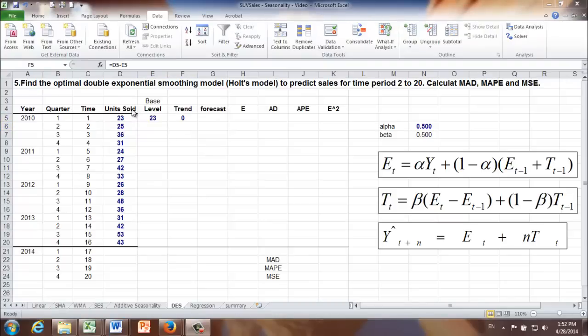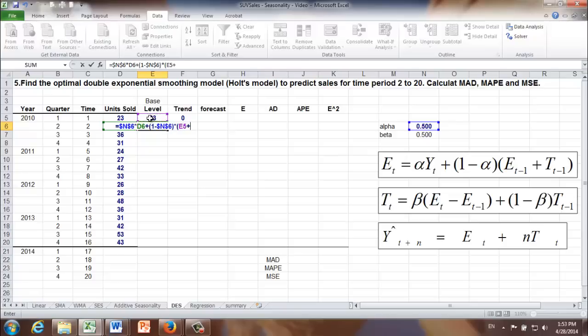After the initialization, let's see what we can do next. Now we can use the formula to calculate E or the base level or T trend. First one we can calculate is E2, base level of time period 2. It's going to be equal to alpha absolute cell reference times the actual sales of time period 2 or Y2, which is 25, plus 1 minus alpha times E sub T minus 1 plus T sub T minus 1. So that is E1 plus T1.